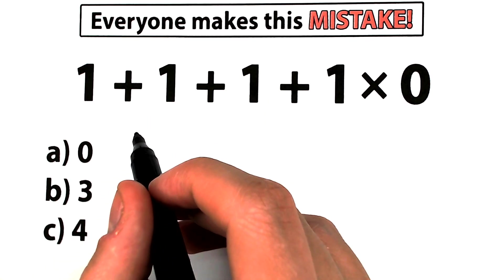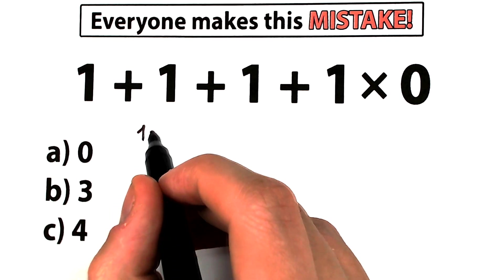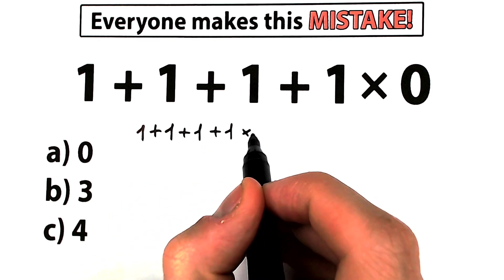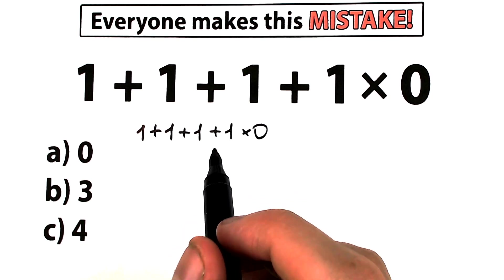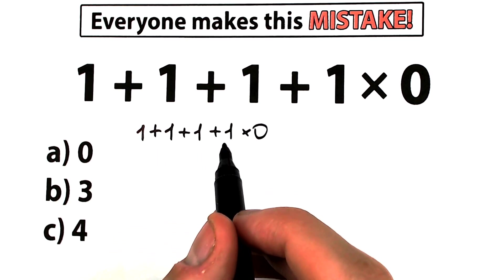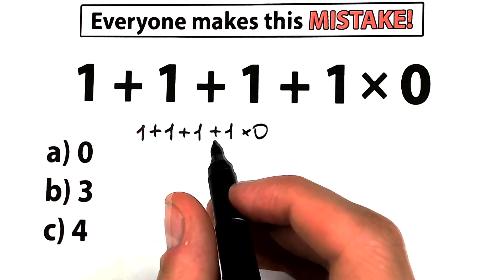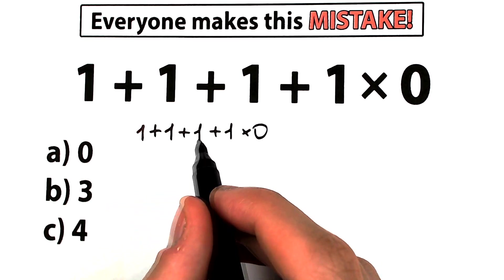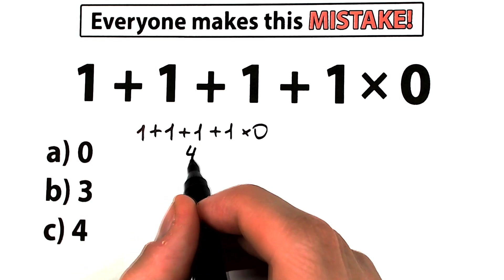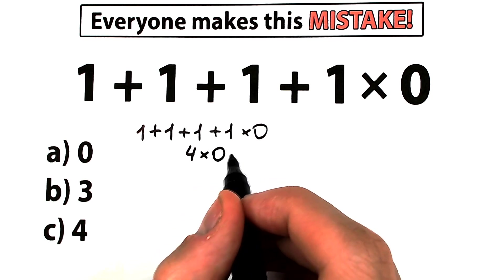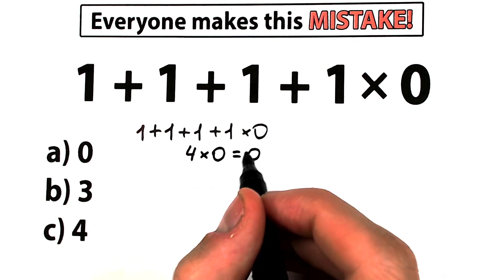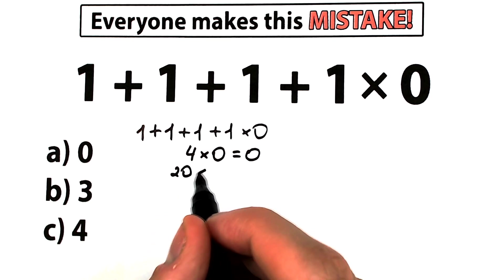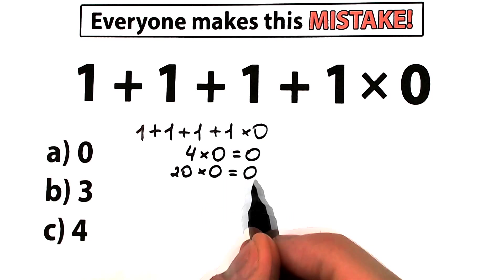So let's start to solve this. We have 1 plus 1 plus 1 plus 1, times 0. From school you know that if we have — it doesn't matter what number on the left hand side — if we multiply it by 0, we will have 0. For example, 1 plus 1 plus 1 plus 1 equals 4, and times 0 — it looks like our correct answer is 0. For example 20: if you multiply 20 by 0, we will have 0.